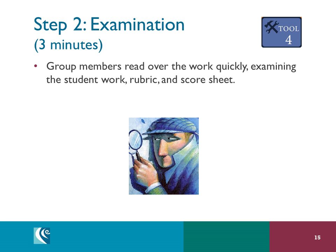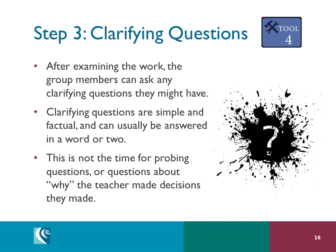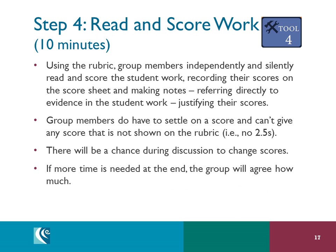During the examination step, group members read over the work quickly, examining the student work, rubric, and scoring sheet. This is not the time they are scoring the work. Group members can then ask any clarifying questions — these should be simple and factual and can be answered in a word or two. Probing or why questions should not be asked at this time. Now is the time to read and score the work silently. Using the rubric, record your scores on the score sheet and make notes justifying the scores. Only scores shown on the rubric can be given, and scores can be changed during later discussion.